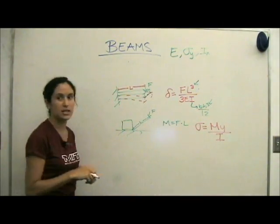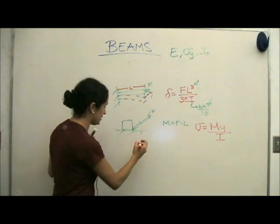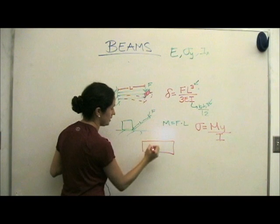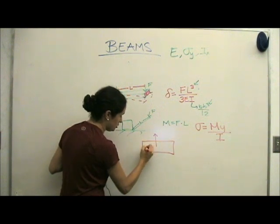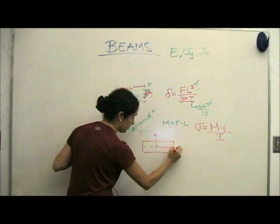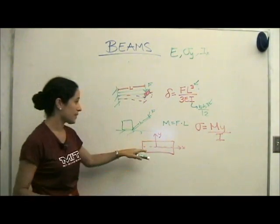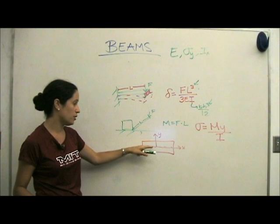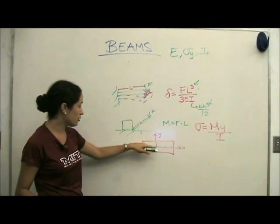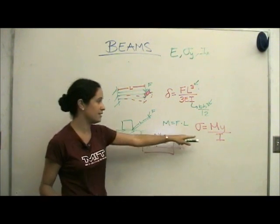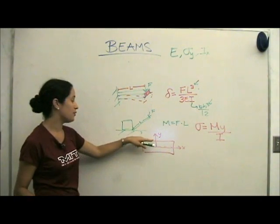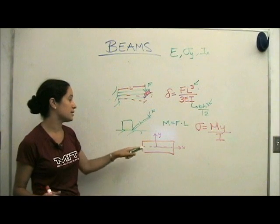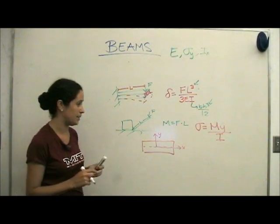Y signifies the distance from the neutral axis. So again, let's look at the cross-sectional area of our beam. This is this area right here, where we have a neutral axis at the middle, which is going to be the x-axis, and this is the y-axis. Right away, what you should see is that the stress is going to depend on where you're looking in the beam. If you're looking right at the neutral axis, y is zero, so there's no stress. If you're looking at the very edge of the beam, that's going to be the highest stress, because that's as far away as we are from the neutral axis of the beam.